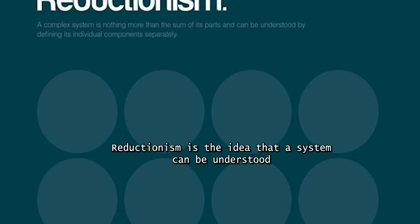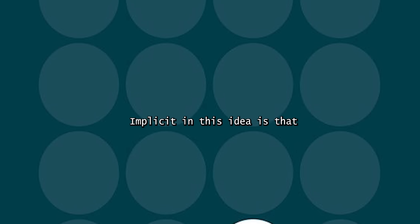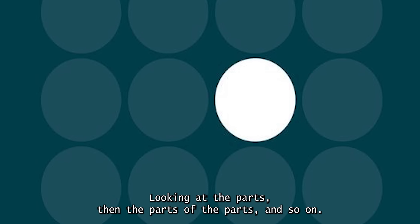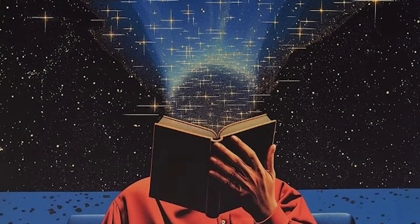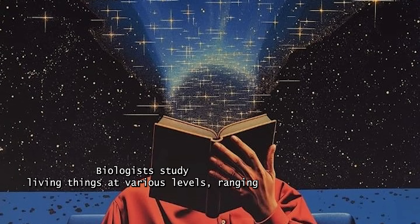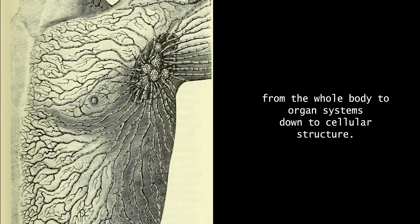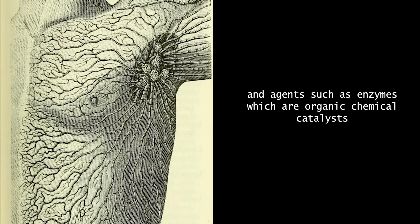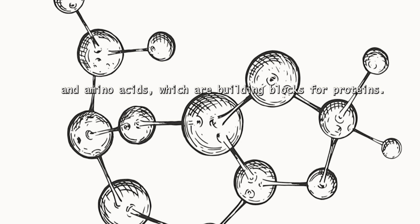Reductionism is the idea that a system can be understood by examining its individual parts. Implicit in this idea is that one may have to examine something at multiple levels — looking at the parts, then the parts of the parts, and so on. Biologists study living things at various levels, from the whole body to organ systems, down to cellular structure. Beyond the cellular level lie chemical interactions and agents such as enzymes, which are organic chemical catalysts, and amino acids, which are building blocks for proteins.